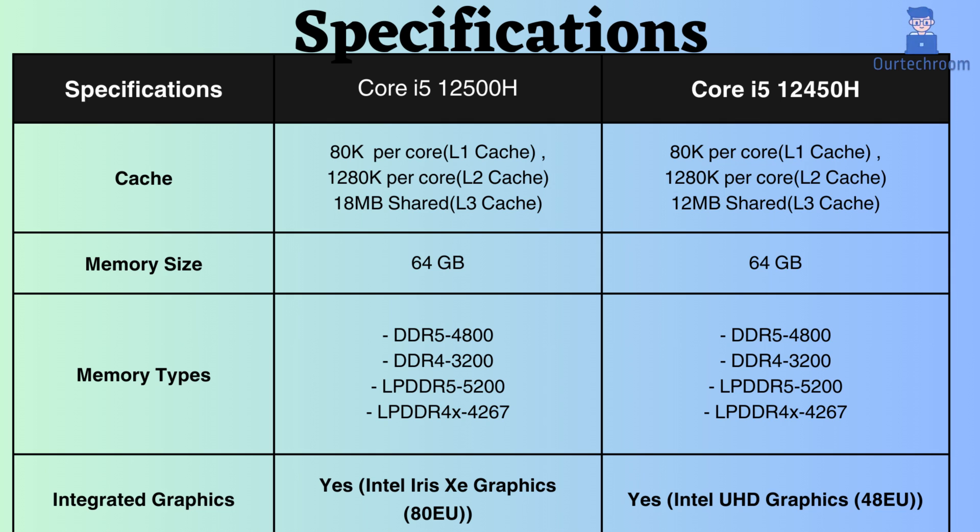Both processors support up to 64 GB of RAM, including LPDDR4, LPDDR5, DDR4, and DDR5, with the same frequency capacity. They also support integrated graphics. The Core i5-12500H features Intel Iris Xe Graphics with 80 EU, whereas the Core i5-12450H has Intel UHD Graphics with 48 EU. Additionally, the graphics frequency of the Core i5-12500H is greater than that of the Core i5-12450H.